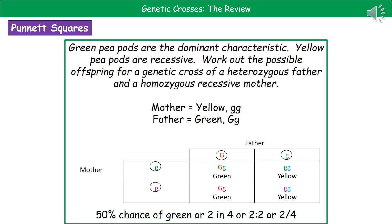Another possible question: green pea pods dominant, yellow recessive. Work out offspring for a heterozygous father and a homozygous recessive mother. The mother is homozygous recessive — yellow with both lowercase g's. The father is heterozygous — green with capital G and lowercase g. Draw the Punnett square, fill in the gametes, and label phenotypes. The two left boxes are green and the two right boxes are yellow, since those only have recessive alleles. This gives a 50% chance of green, or two in four, two to two, or two out of four.